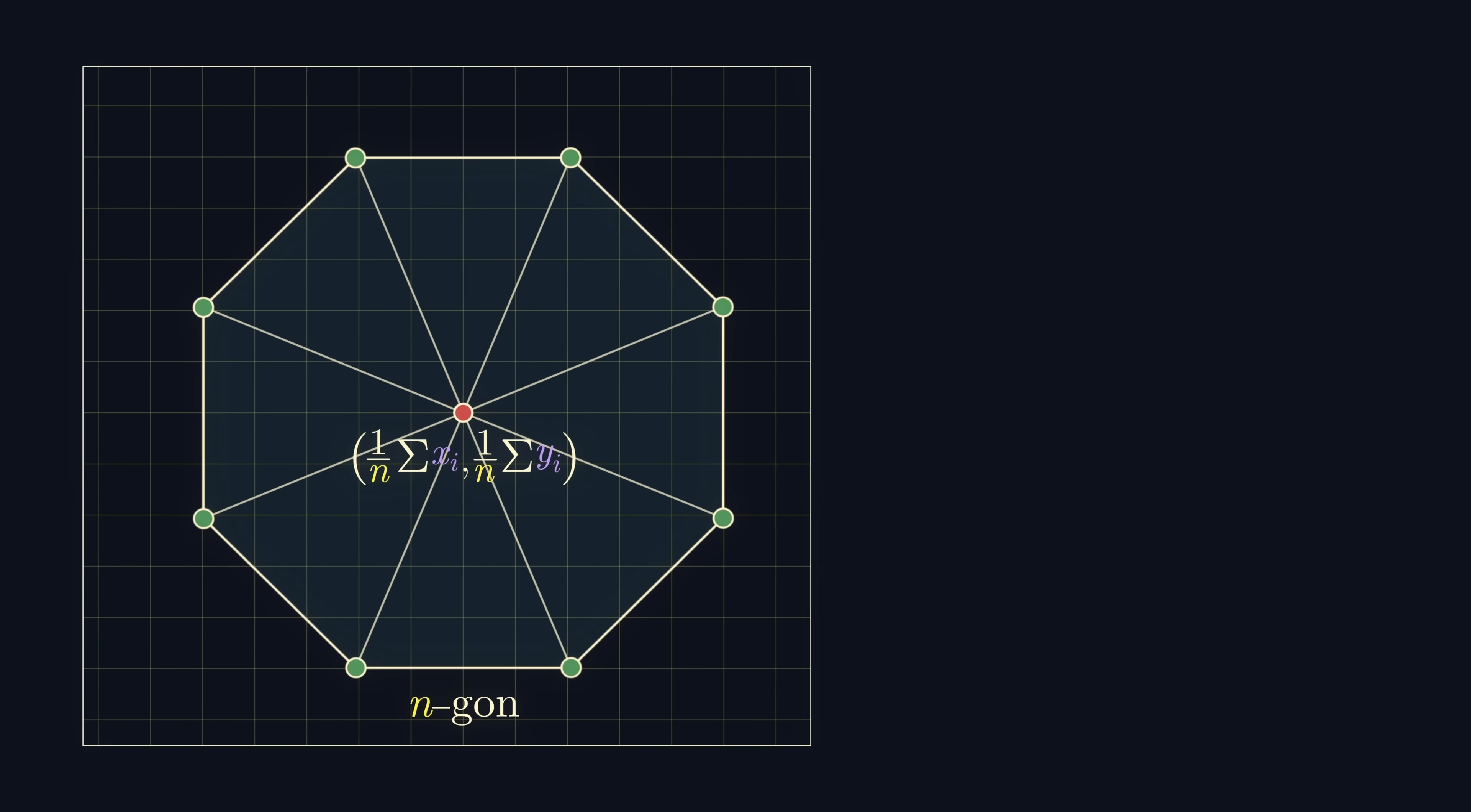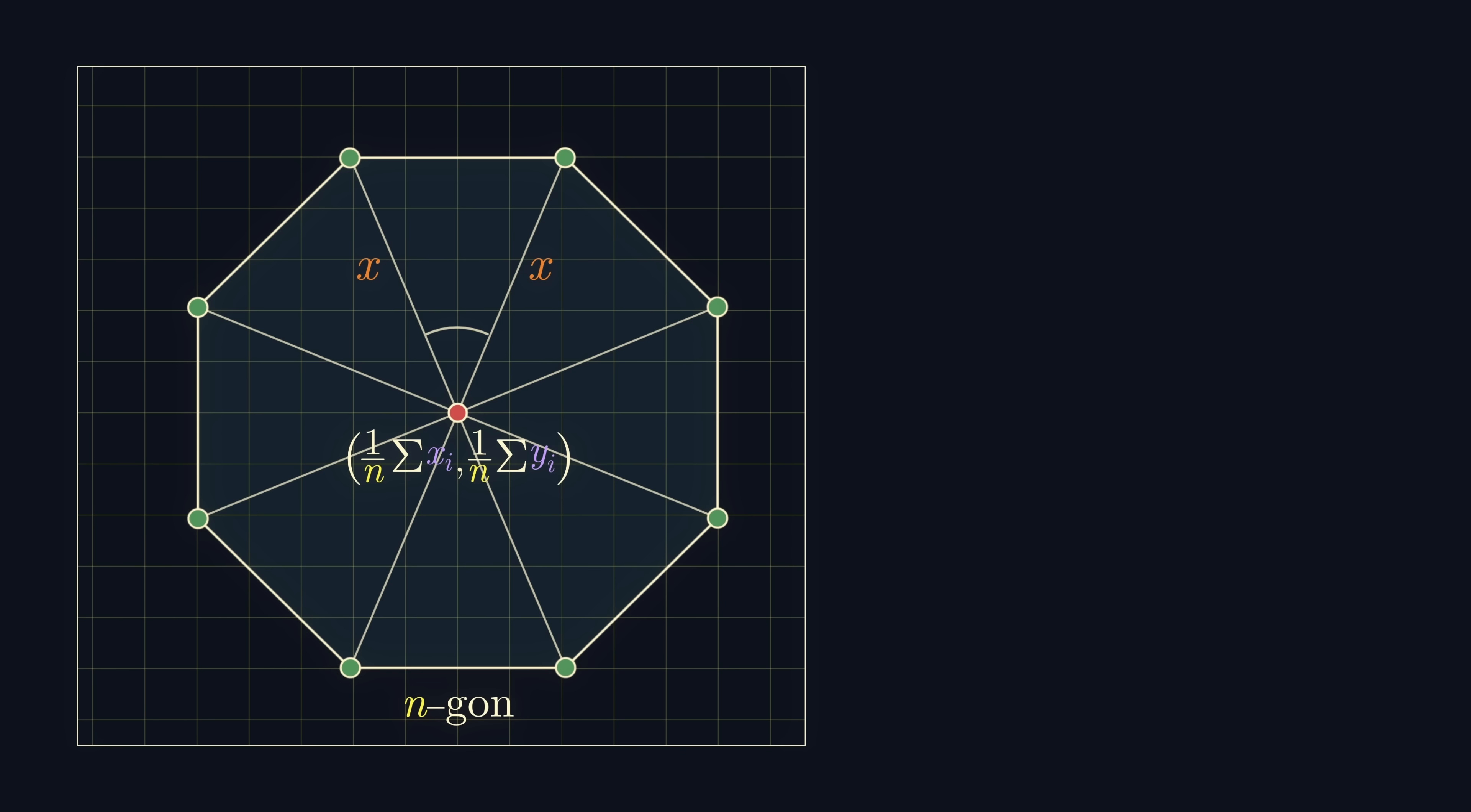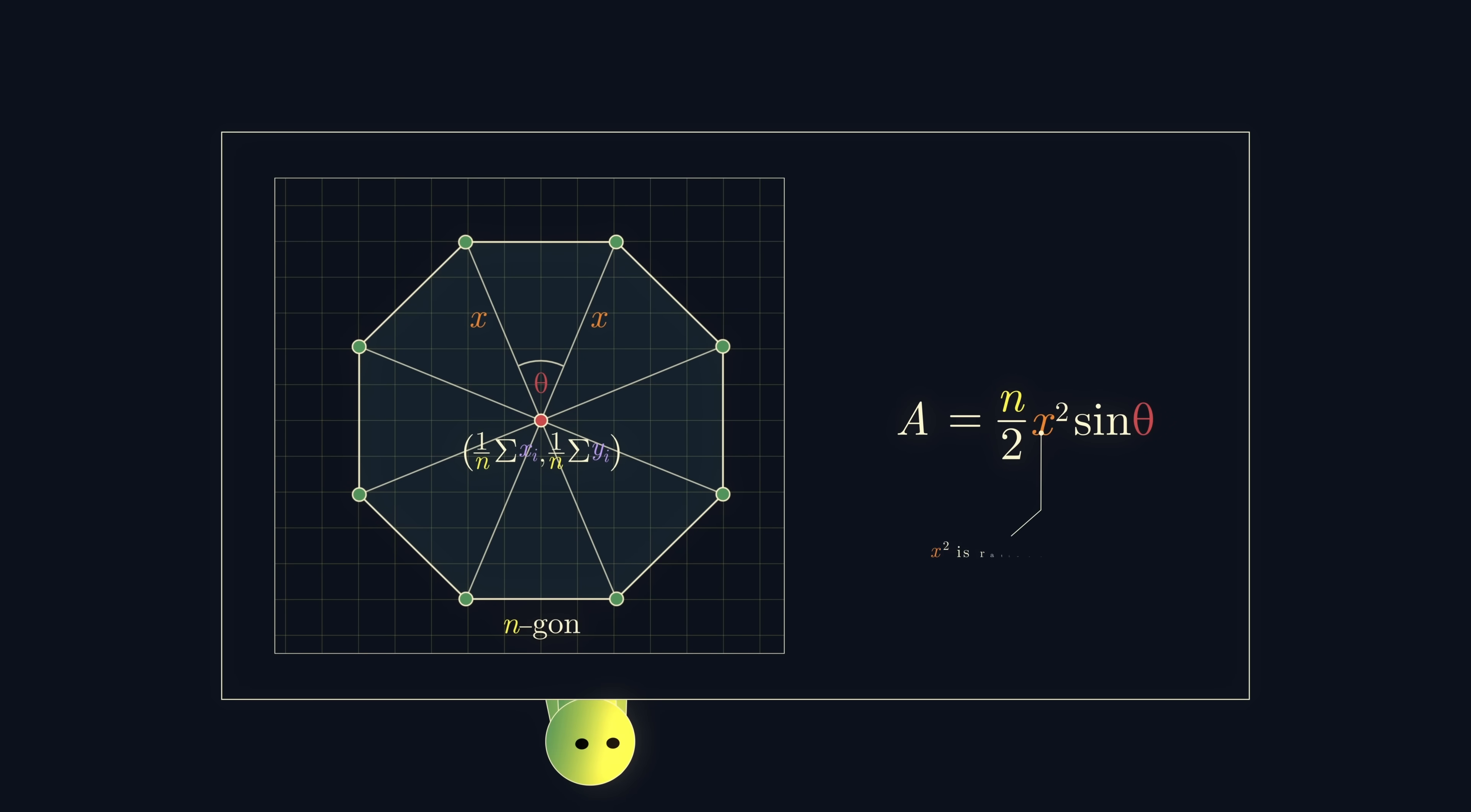Using the same formula to find the area of a triangle as before, we can find the area of one of these isosceles triangles and multiply it by n. But again, by Pythagoras, x-squared must be rational. So, we're left with the question of whether sin theta is rational.